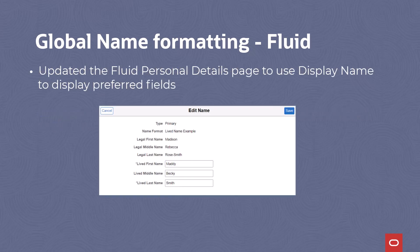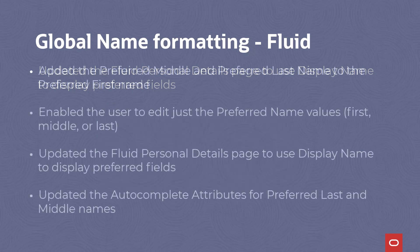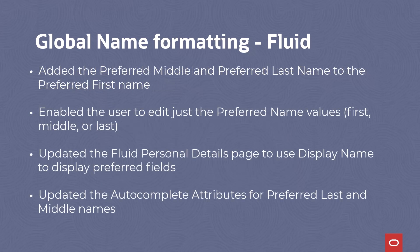In PUM 28, we expanded the options on the name format type page for how the display name, the formal name, and the PeopleSoft format name are configured. As a result, we updated the fluid personal details page to use display name to display preferred fields, which typically aren't included in the formal name. Also, we've updated the autocomplete attributes for the preferred last and preferred middle names in PUM 29.